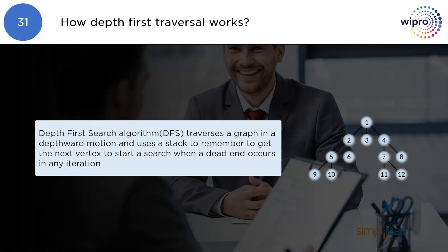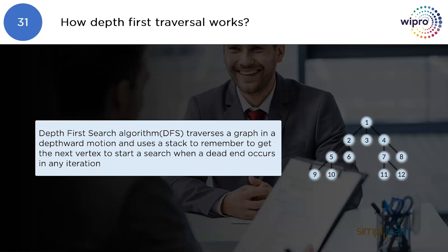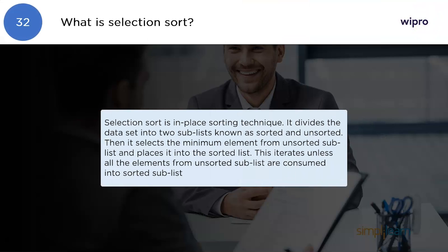How does depth-first traversal work? The depth-first search algorithm traverses a graph in a depthward motion and uses a stack to remember the next vertex to start the search when a dead end occurs in any iteration.